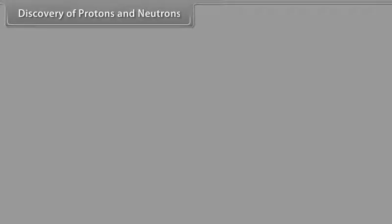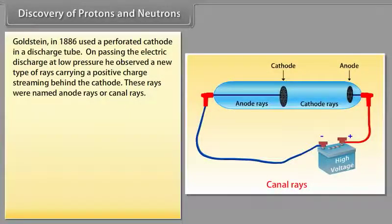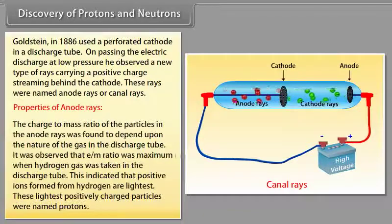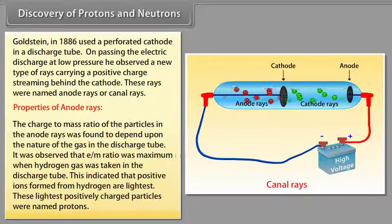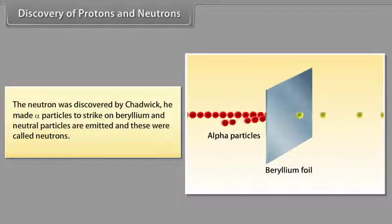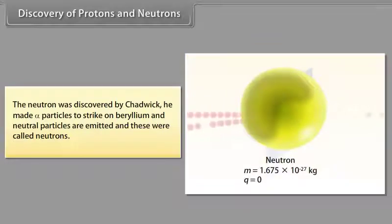Discovery of protons and neutrons: Goldstein in 1886 used a perforated cathode in a discharge tube. On passing electric discharge at low pressure, he observed a new type of rays carrying positive charge streaming behind the cathode, named anode rays or canal rays. The E/M ratio of particles in anode rays was maximum when hydrogen gas was used, indicating the lightest positive ions — named protons. Neutrons were discovered by Chadwick, who made alpha particles strike beryllium, emitting neutral particles called neutrons.